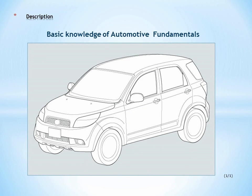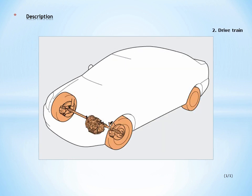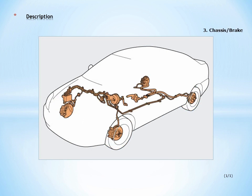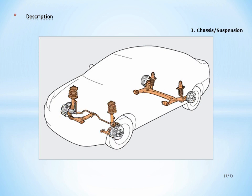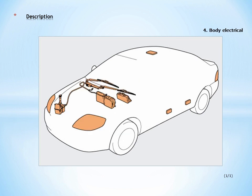The vehicle consists of: Engine, Drive train, Chassis (brake), Chassis (suspension), Chassis (steering), Body electrical, and Body.